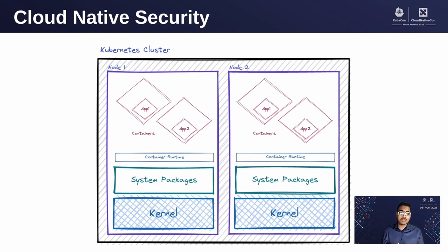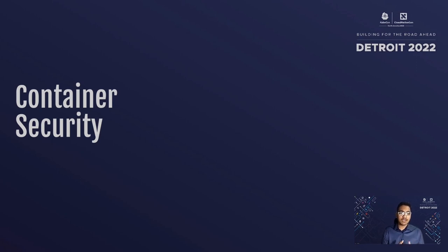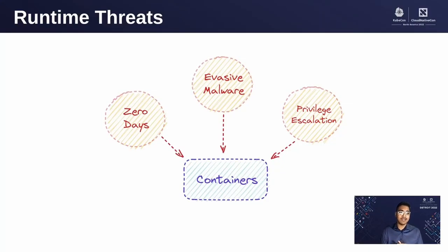There is a need to enforce security at the container level, hence the need for container security. We usually have some static analyzers in place, but they only let us know about what known vulnerabilities our containers are vulnerable to. But recent vulnerabilities like Log4j and PwnKit could not have been detected statically. Threats like zero-days, malware meant to evade analyzers, and privilege escalation attempts manifest at runtime and cannot be detected statically.